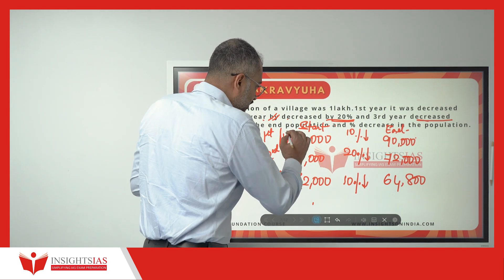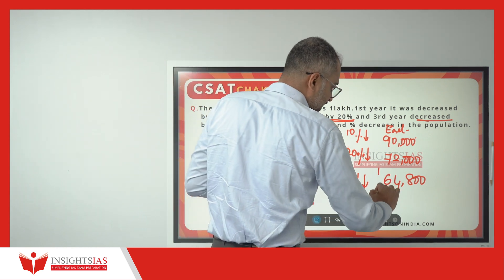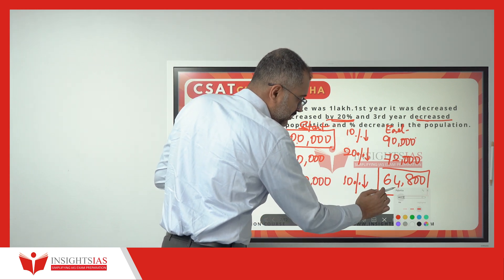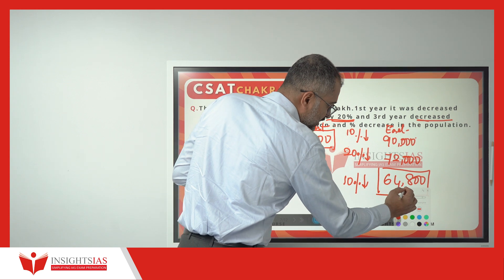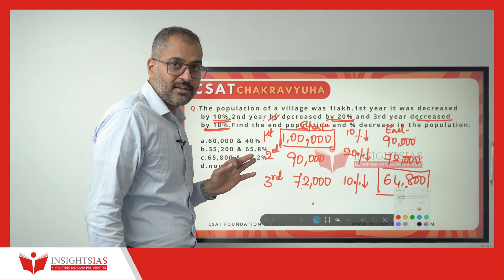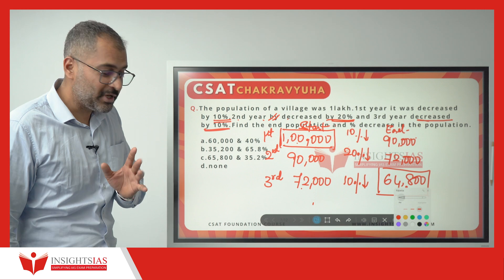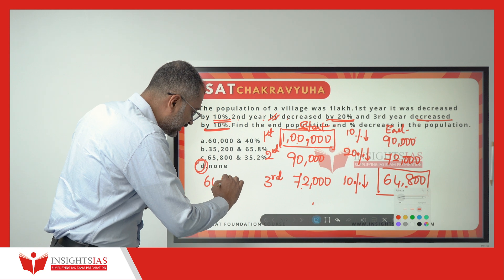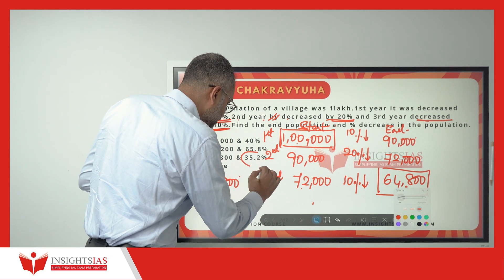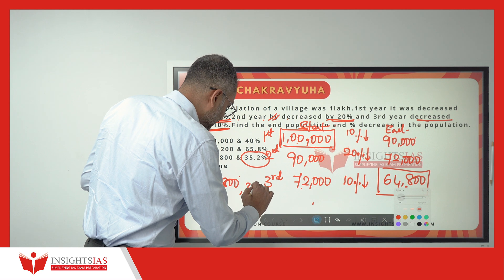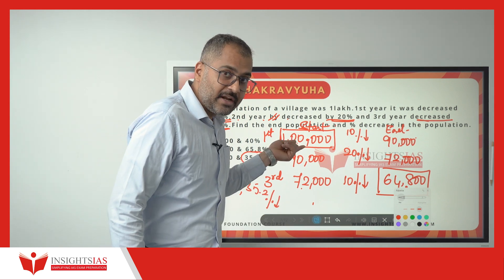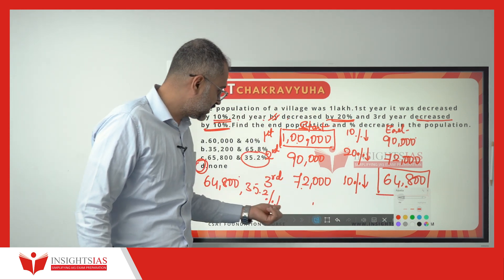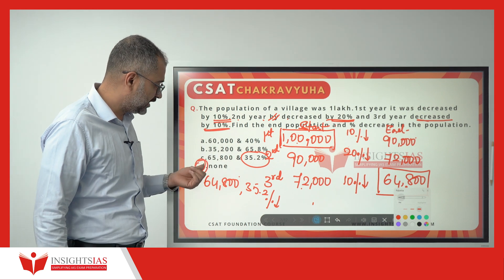Originally the population was 1,00,000 and now it is 64,800. For every 100, it has become 64.8. So what is the decrease? 35.2 decrease. The end population is 64,800 and the percentage decrease is 35.2%. The option is 'none' because none of the given options match.